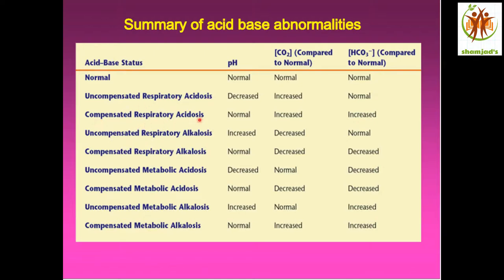Compensated respiratory acidosis: the pH remains normal as a result of compensation. CO2 is increased (respiratory acidosis), and the bicarbonate is also increased. Why? We need to neutralize the acid with base. The kidney retains the bicarbonate, so the bicarbonate level is high. The bicarbonate then goes and neutralizes the acid, and as a result we get a normal pH value.